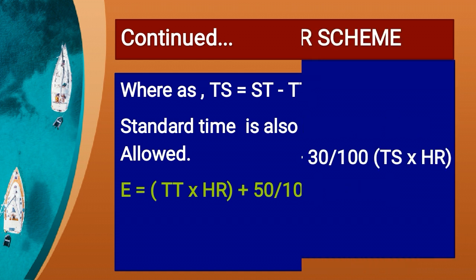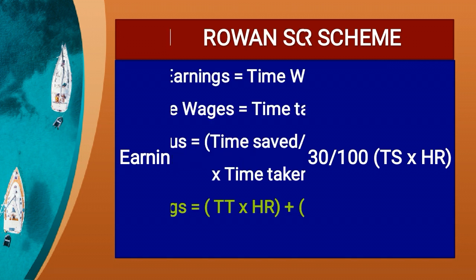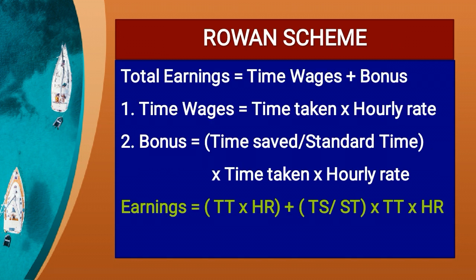Next is the Halsey Weir Scheme. It is same as the Halsey Premium Plan with one difference. The Halsey Weir Scheme formula is: Earnings = Time Taken × Hourly Rate + (30/100) × Time Saved × Hourly Rate. So the difference is 30% bonus instead of 50%.